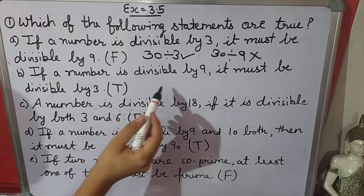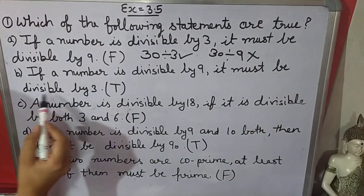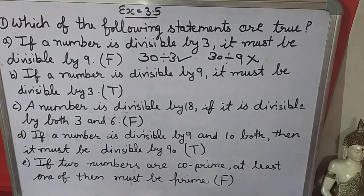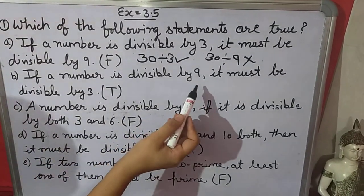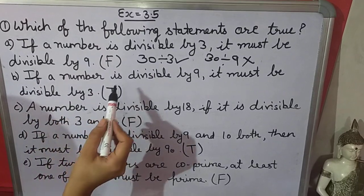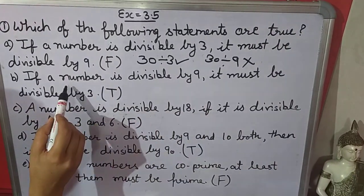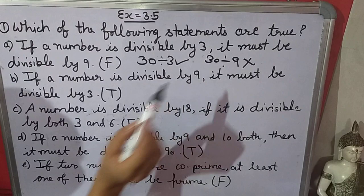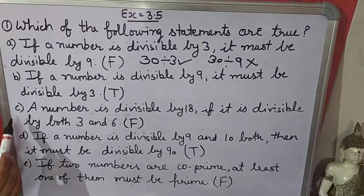Next — if a number is divisible by 9, it must be divisible by 3. Yes, it is true. Because 3 is a factor of 9. If a number is divisible by 9, then that number must be divisible by its factor also. So it is true.